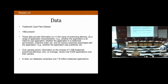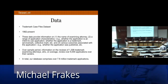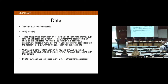We collect data on individual trademark applications from 1982 to the present, and we have about 7.8 million applications. For each application, we know information about the trademark examining attorney to which the application was randomly assigned — the name of that attorney, the outcome of the application, whether it was published or registered, and various characteristics such as what type of mark it is and what industry it's in. We have about 1,300 trademark examiners tracked over time, and they do a lot of reviews over their careers — on average about 6,000 reviews each.